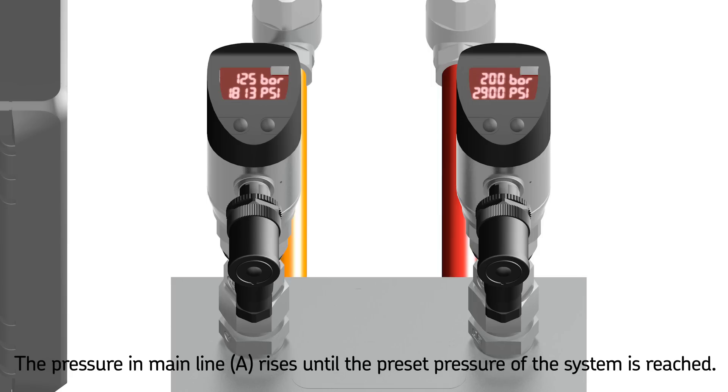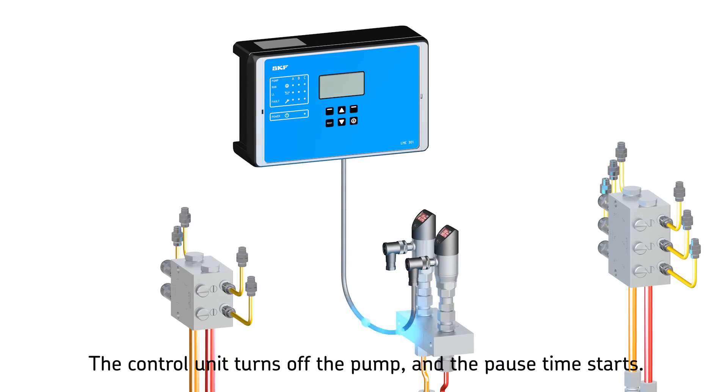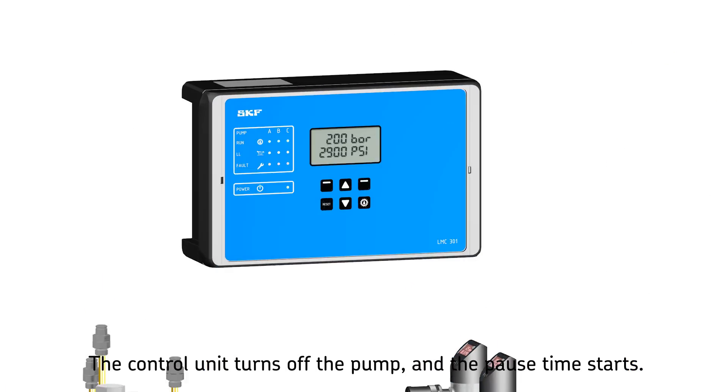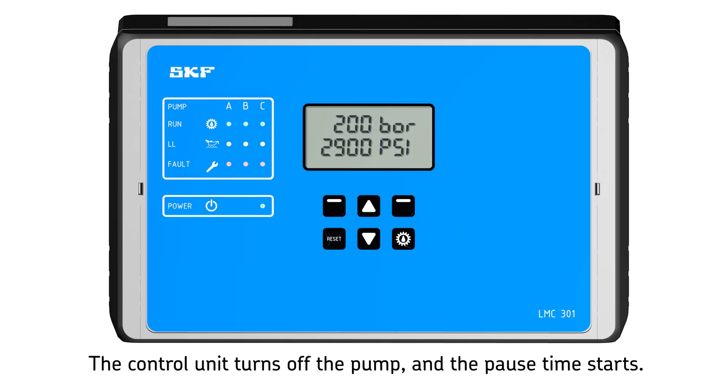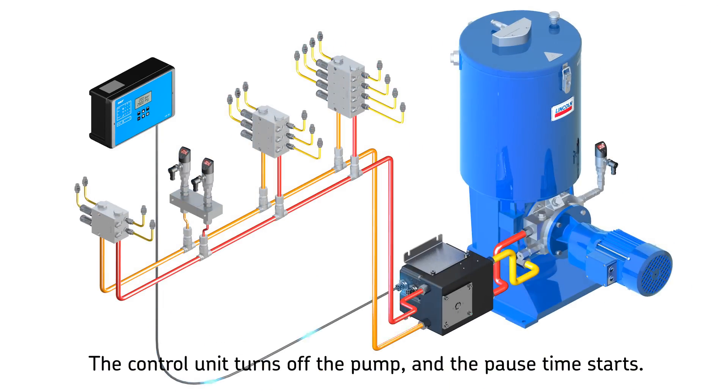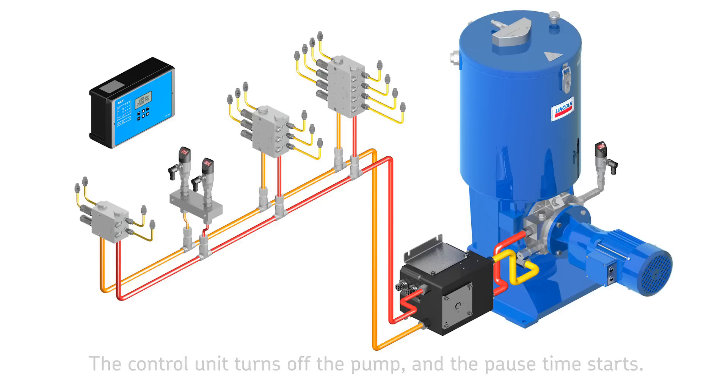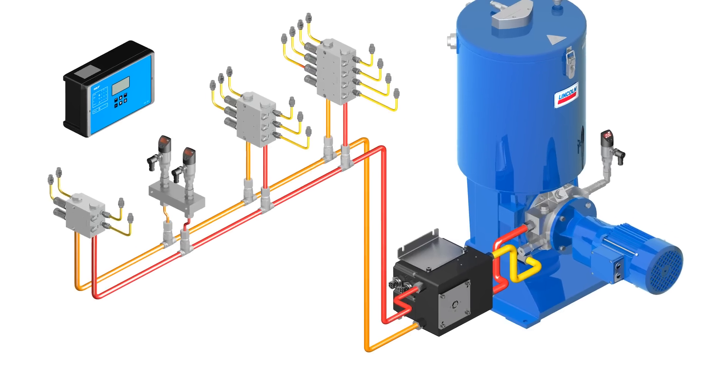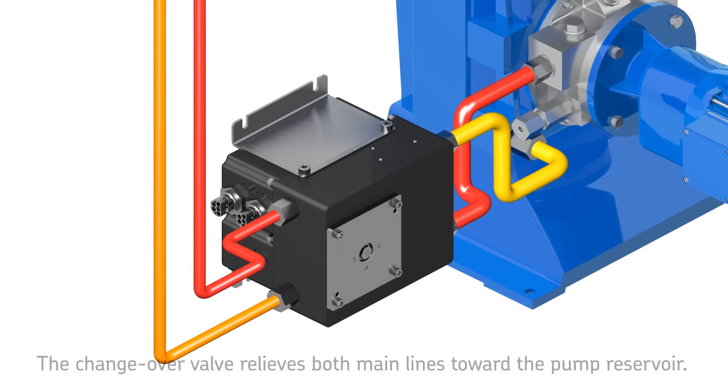The pressure switch then signals an electric pulse to the control unit, which turns the pump off and signals the changeover valve to relieve mainlines A and B, and the pause time starts. At this stage, half of the lubrication points in the system have been lubricated.